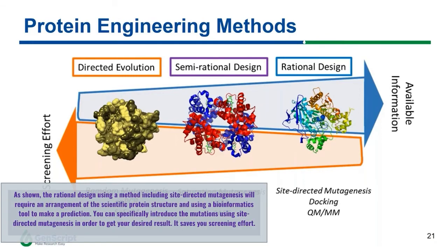As shown, rational design using methods including site-directed mutagenesis requires a range of scientific knowledge of the protein structure. Using bioinformatic tools to make predictions, you can specifically introduce mutations using methods such as site-directed mutagenesis in order to get your desired result. The good thing is, it saves your screening effort.